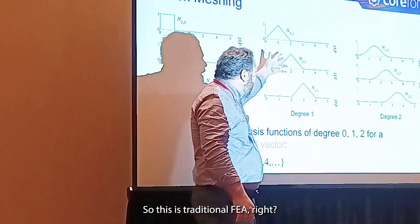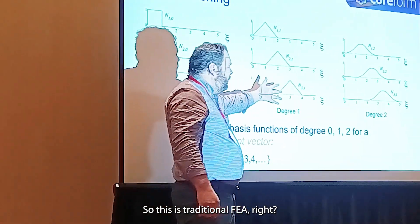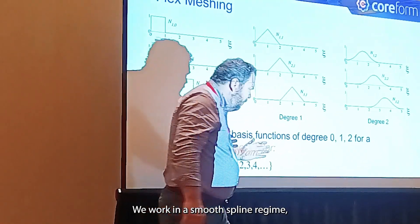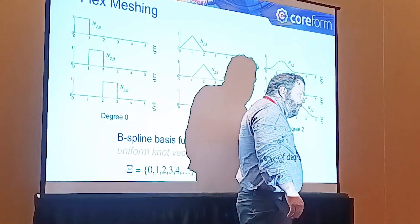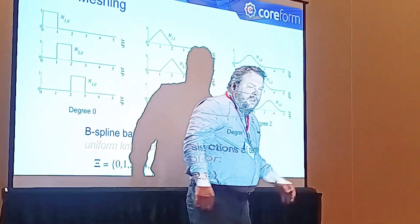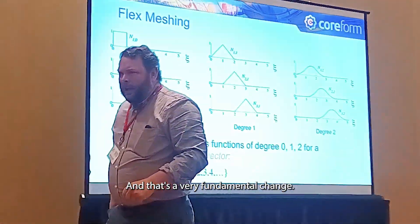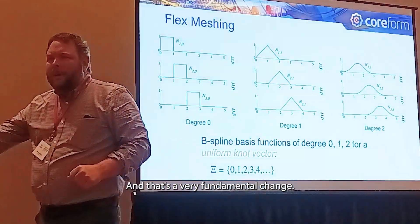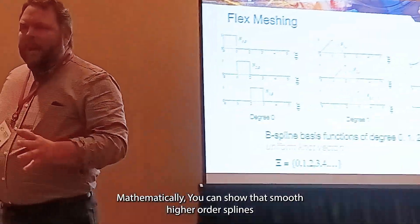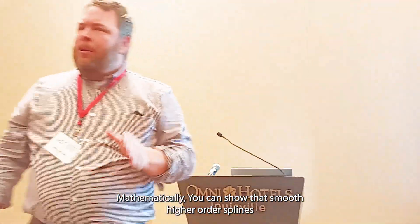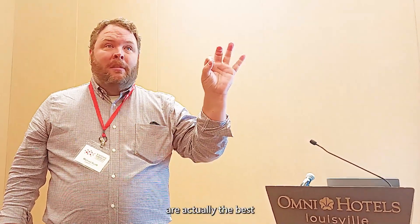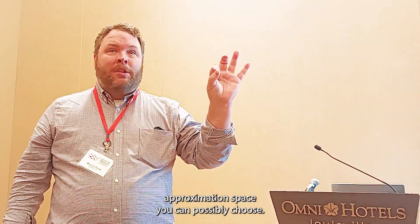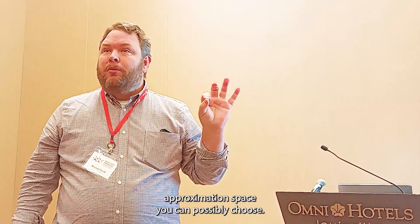So this is traditional FEA — this is linear hat functions. We work in a smooth spline machine instead, and that's a very fundamental change. Mathematically you can show that smooth higher-order splines are actually the best approximation space you can possibly choose.